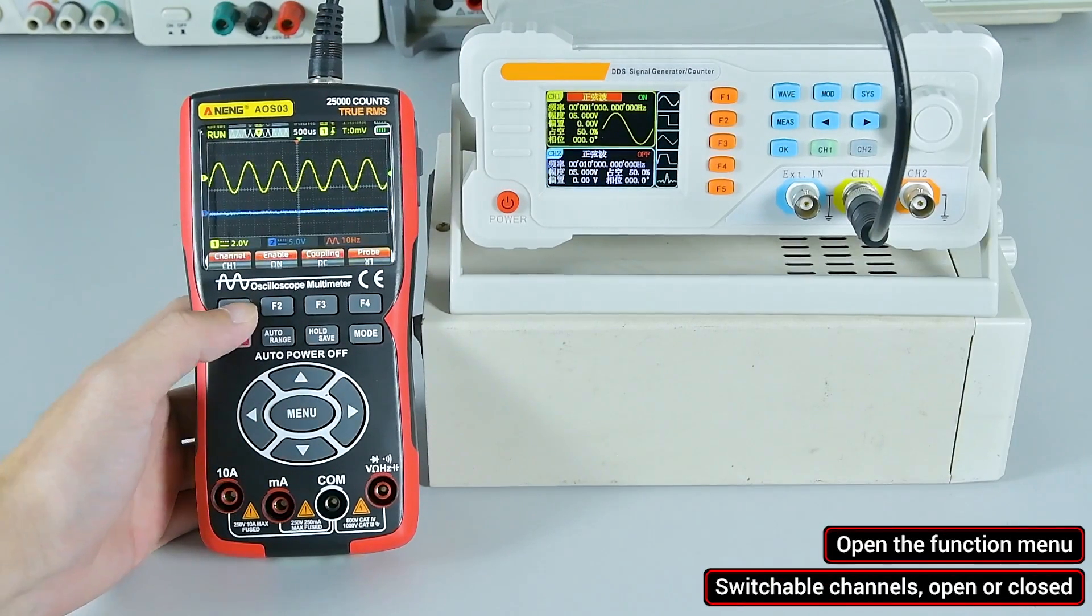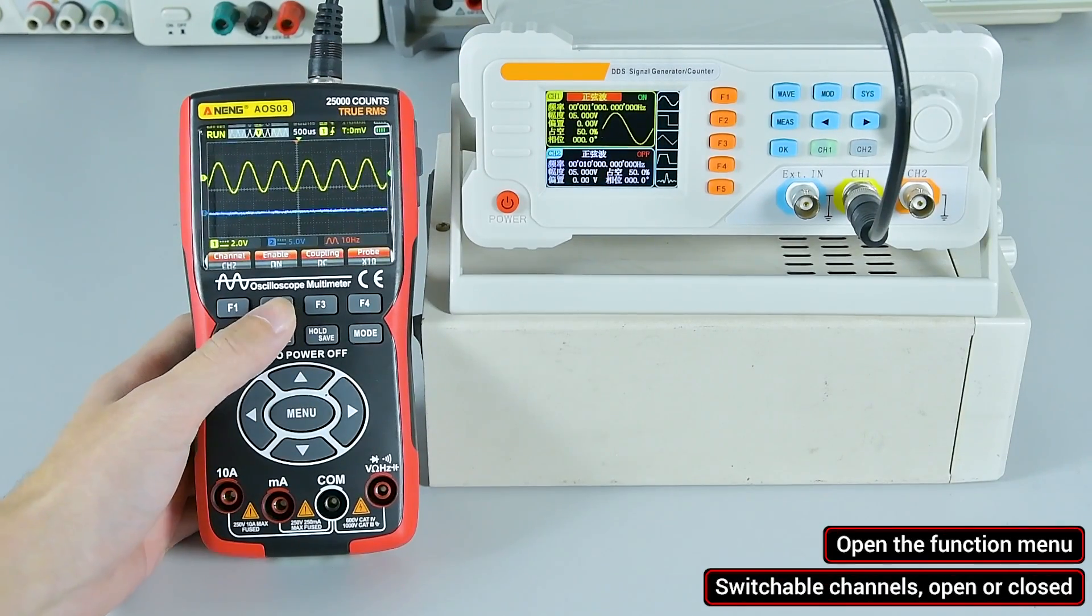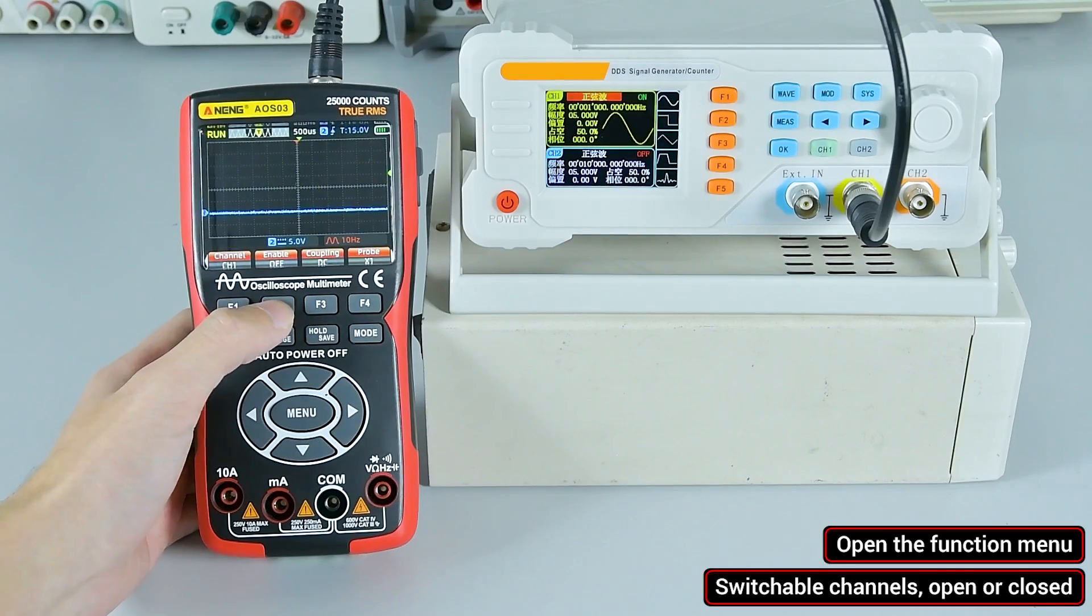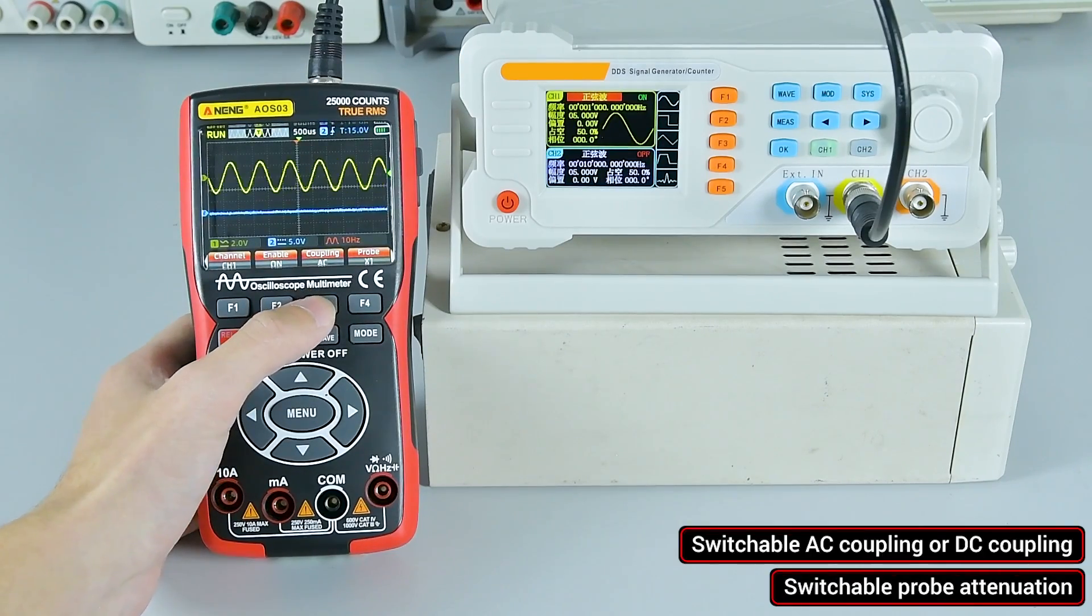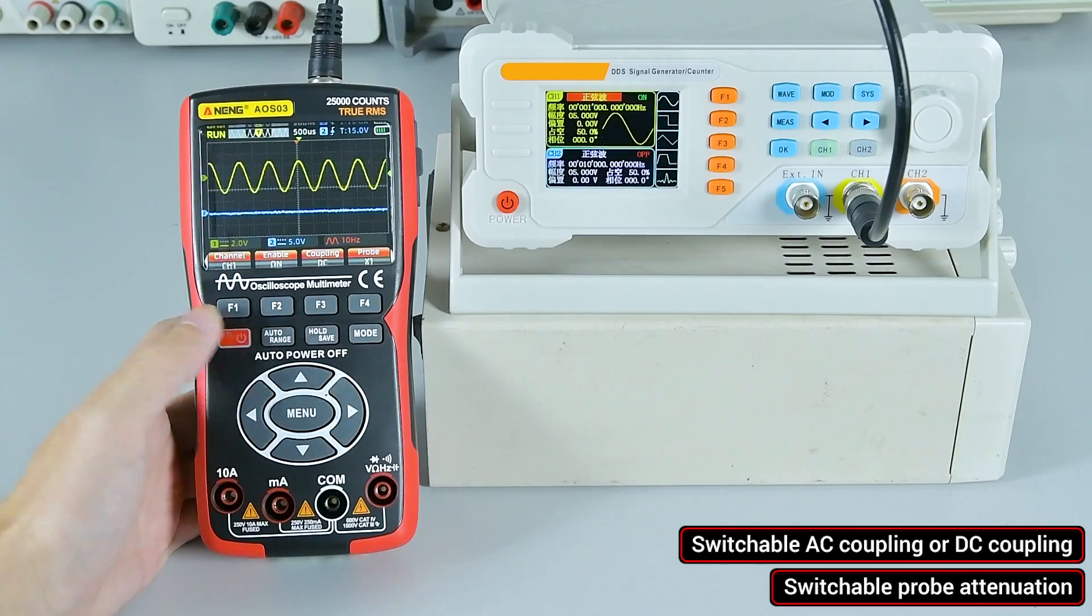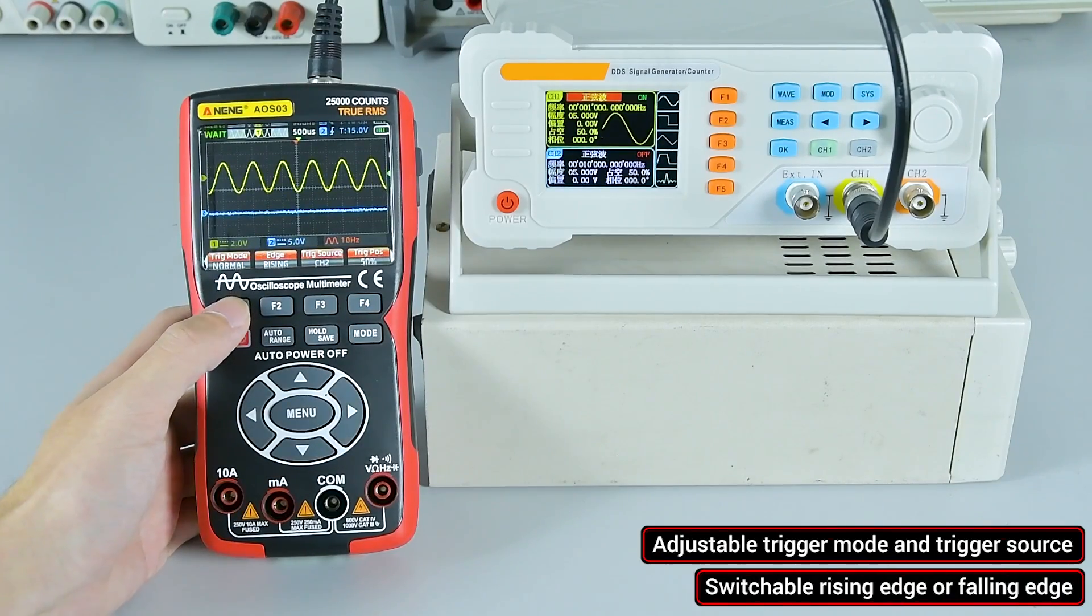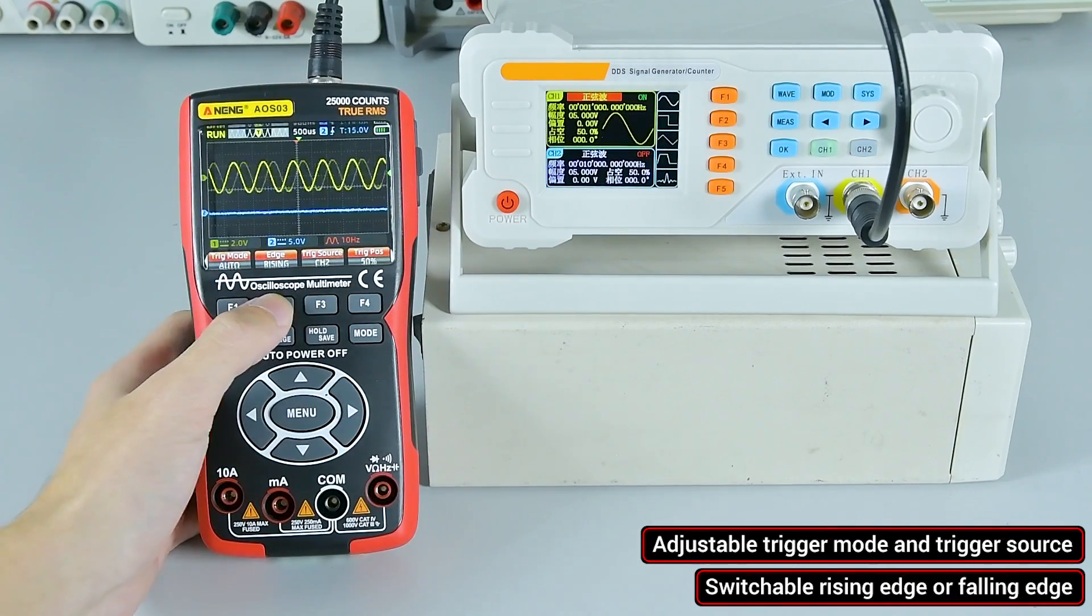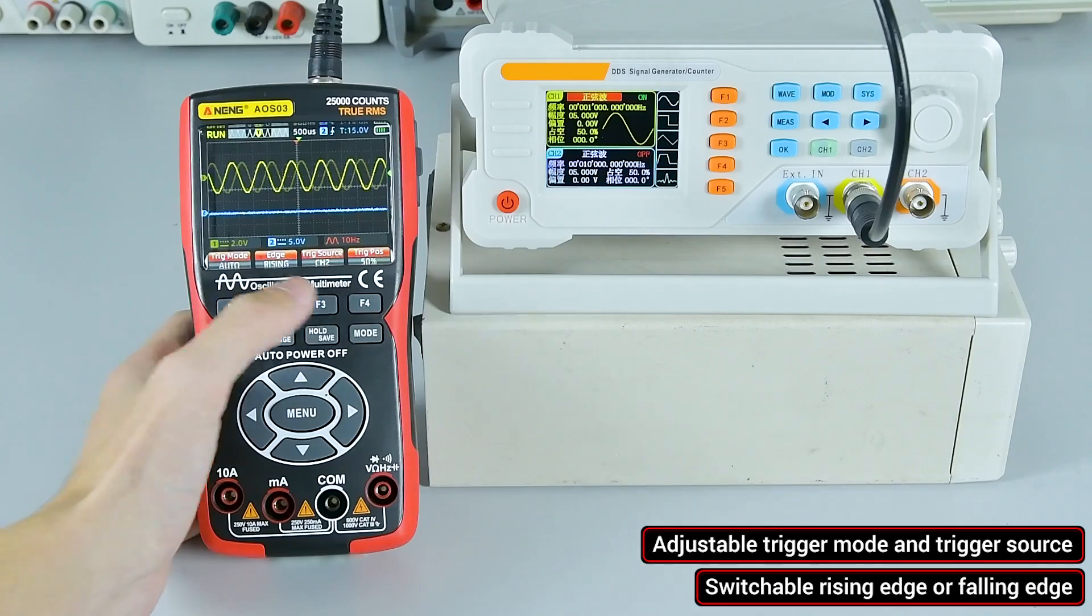Open the function menu. Switchable channels, open or closed. Switchable AC coupling or DC coupling. Switchable probe attenuation. Adjustable trigger mode and trigger source. Switchable rising edge or falling edge.